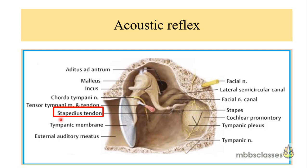To refresh the anatomy, the stapedius muscle arises from the pyramid and is attached to the neck of the stapes. This is the stapes — the stapedius muscle is arising here, attached to the neck of the stapes. When this stapedius muscle is stimulated, it leads to the contraction of the stapedius muscle. When the stapedius muscle contracts, it increases the stiffness of the middle ear conductive system.